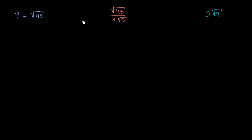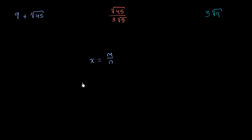Let's think about whether each of these expressions produce rational or irrational numbers. As a reminder, a rational number x can be expressed as the ratio of two integers, m and n. If you have an irrational number, this cannot happen. So let's think about each of these.